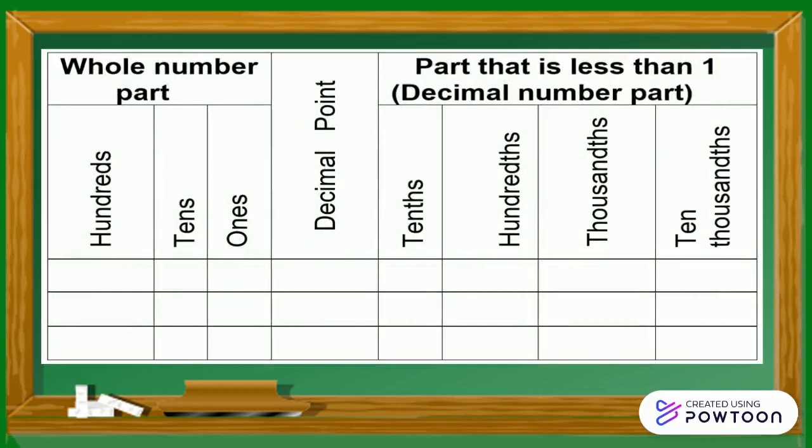Now, let us put the decimals 0.7, 0.92, and 0.823 in the place value chart.